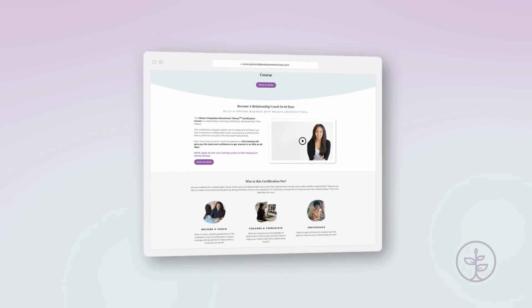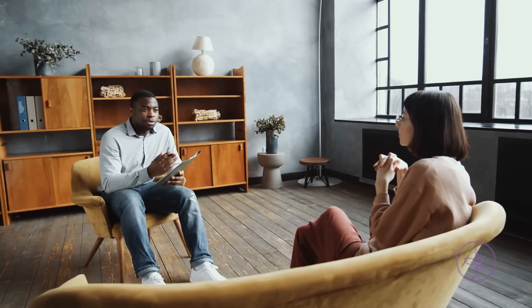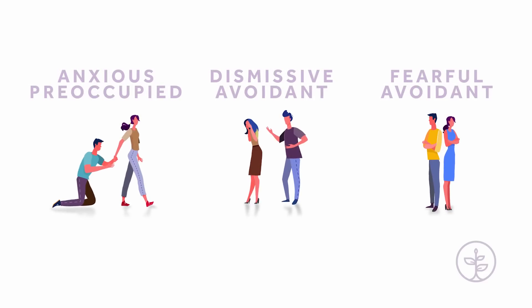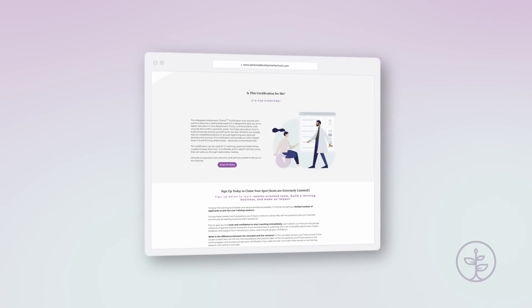I have some really exciting news: integrated attachment theory training is back. You can be trained to become a certified relationship coach in integrated attachment theory in literally 60 days. This is for any individual who wants to make an impact and be of service to others while also obtaining freedom, flexibility, and abundance in their lives. It's also for anybody who's already a counselor, therapist, or coach who wants to expand their toolkit, or someone looking to obtain mastery in understanding their own attachment patterns and those of their children, partner, or other loved ones. Please keep in mind the last two times we ran this program, we filled up very fast — click the link below to learn more before seats run out.